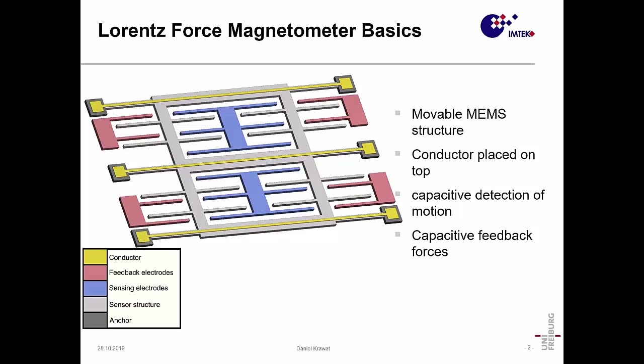Here you see a very basic schematic of such a sensor. It's a movable MEMS structure. This gray area here is suspended by these beams to these anchors and can move in plane up and down. We have several electrodes that can detect the motion and also can be used to apply capacitive feedback. The most important part are these conducting wires that run along the structure.